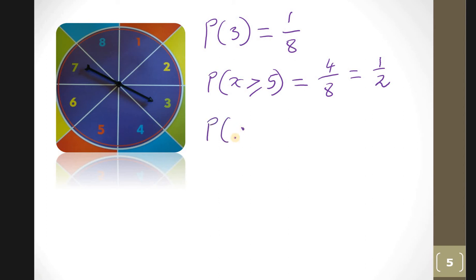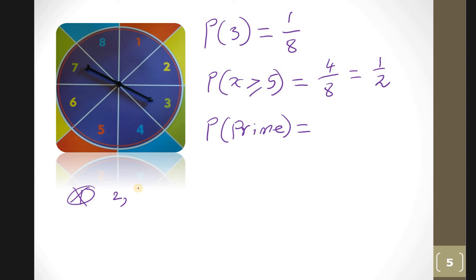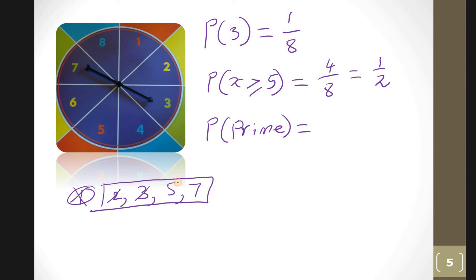What is the probability of getting a prime number? A prime number has exactly two factors. One is not prime — it only has one factor. So: two is prime, three is prime, four is not, five is prime, six is not, seven is prime, eight is not. That gives four primes, so four out of eight, which is a half.